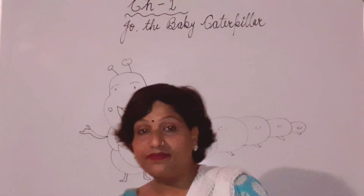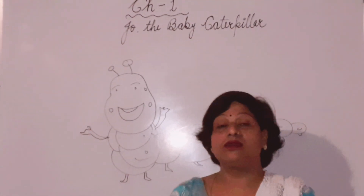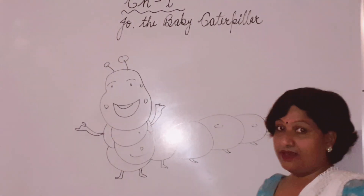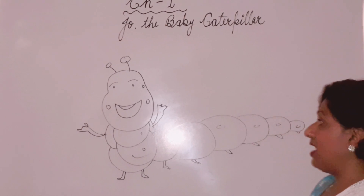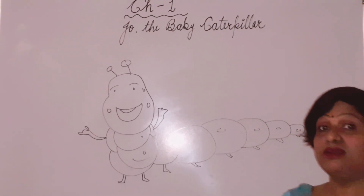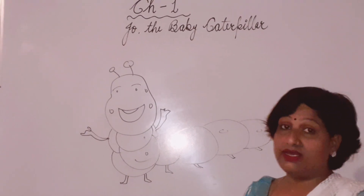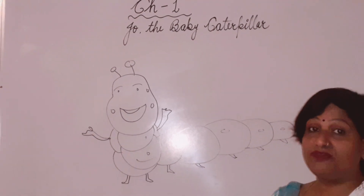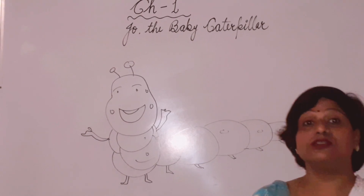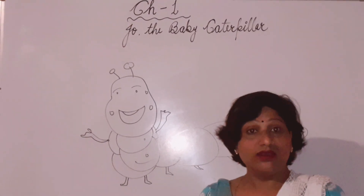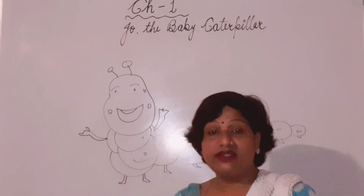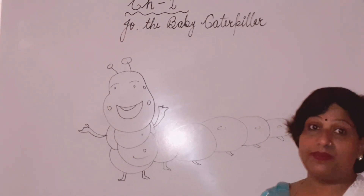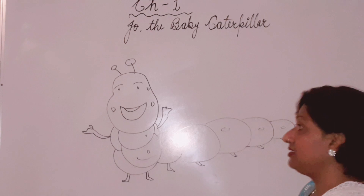It was summer. Jo the baby caterpillar crawled slowly and nibbled the green leaves. When the autumn came, the green leaves turned into yellow, and she had been tired by traveling for many days. So she found a cozy place in the branches of a grapevine and made a soft blanket with the help of green leaves. But when the winter came, all the grapevine was covered with snow.